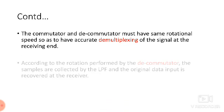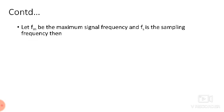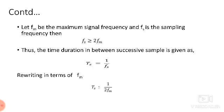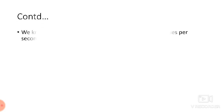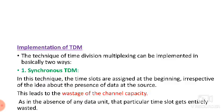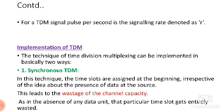According to the commutator's rotation, time slots are chosen. The maximum frequency is fm, and for sampling, fs must be greater than or equal to 2fm. The sampling period ts equals 1/fs, so ts ≤ 1/(2fm). The pulse frequency is 1/ts, which equals n·fs.